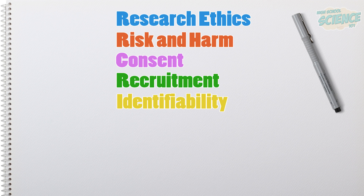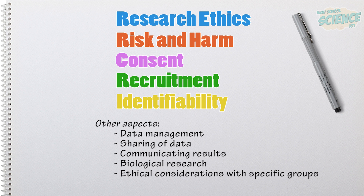That gives you a very broad overview of the main things you need to be mindful of when doing research involving people. Some other things that the standards cover that I haven't gone into include data management, sharing of your data with other researchers, and communicating your results to participants and other third parties. The standards also include a whole chapter on biological research as well as another chapter on ethical considerations that apply to specific groups of people.